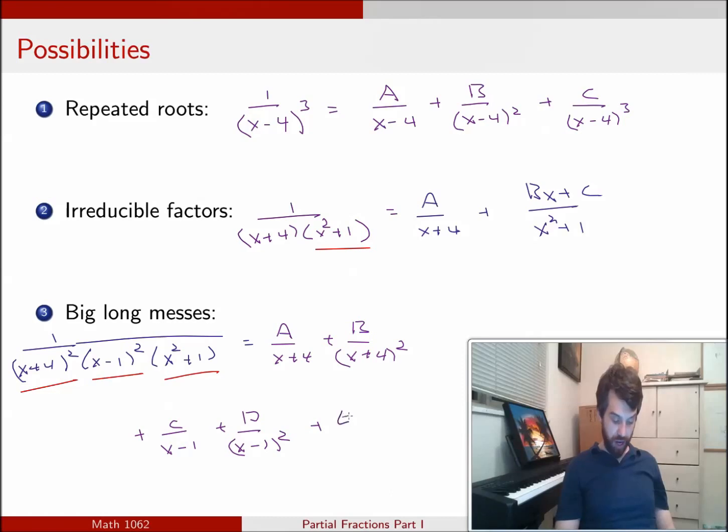And finally I have this irreducible term over here. So I'm going to have to introduce a linear, A, B, C, D are all taken, so I'm going to call it Ex plus F. And then it's all divided out by x squared plus 1.